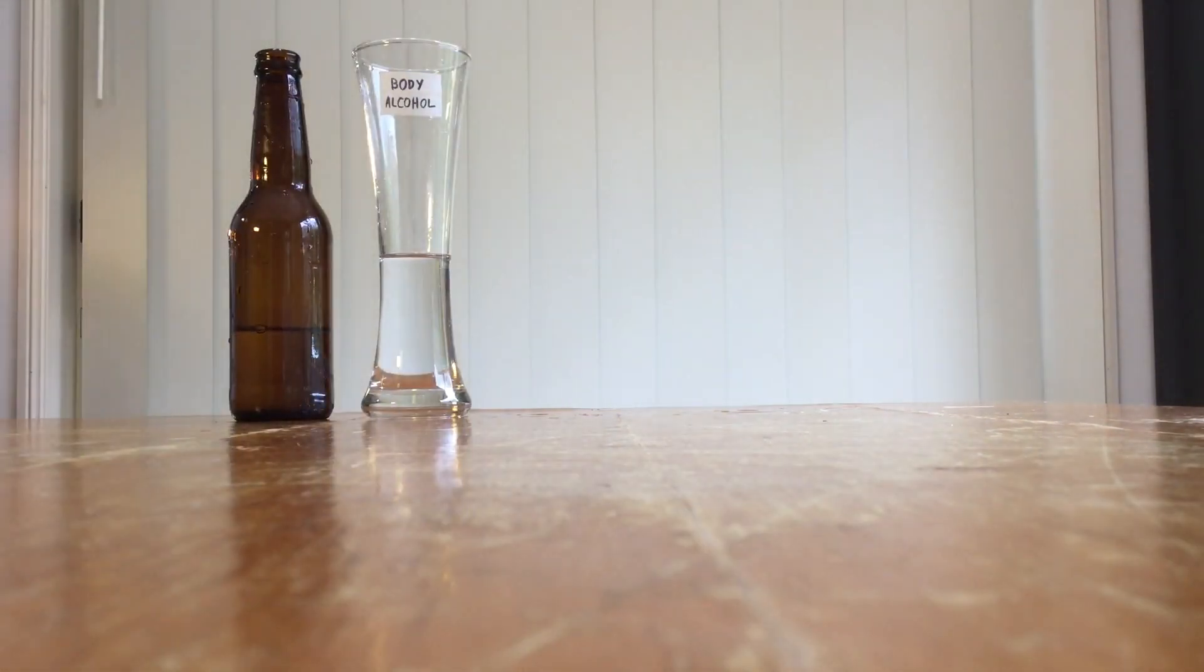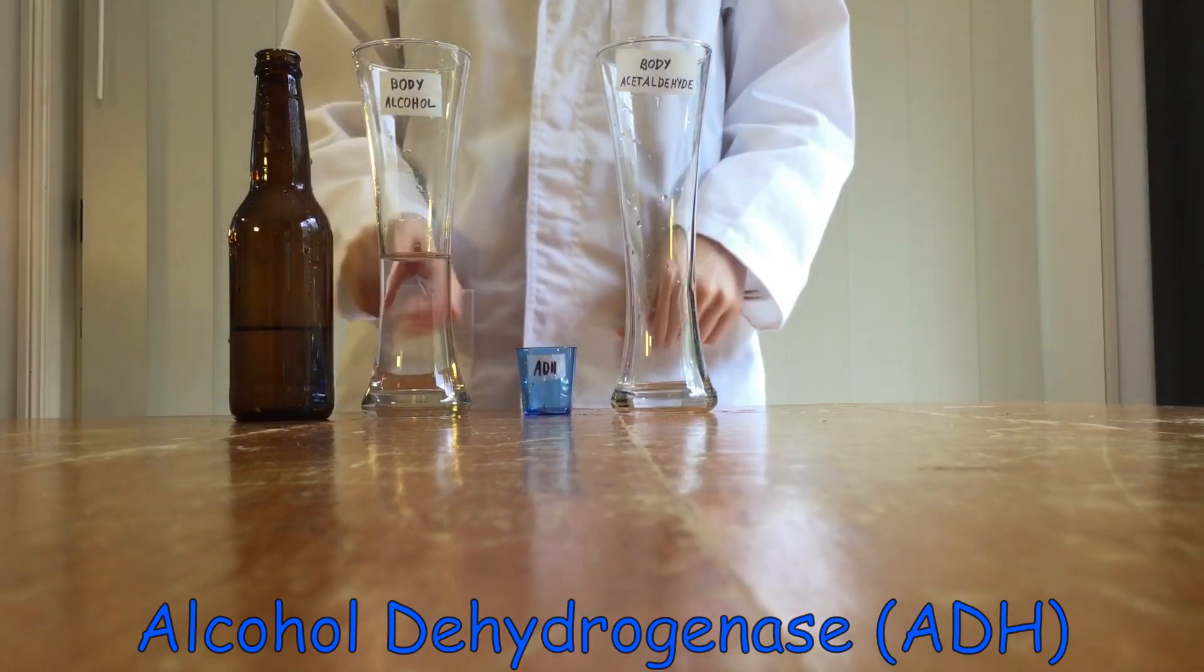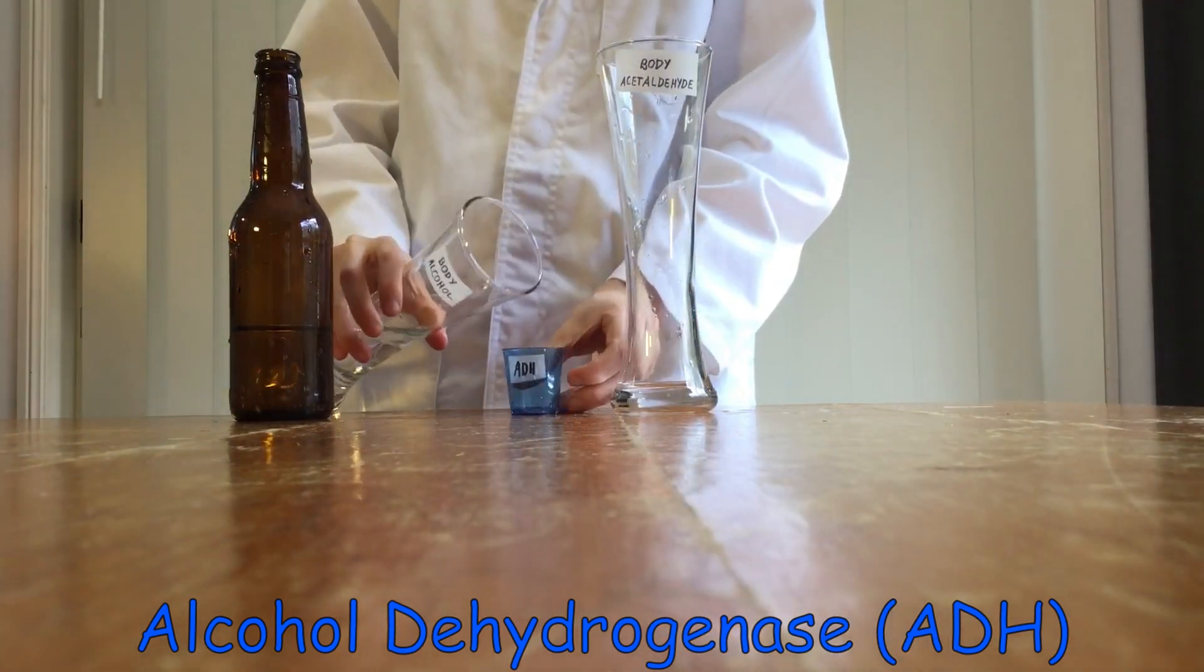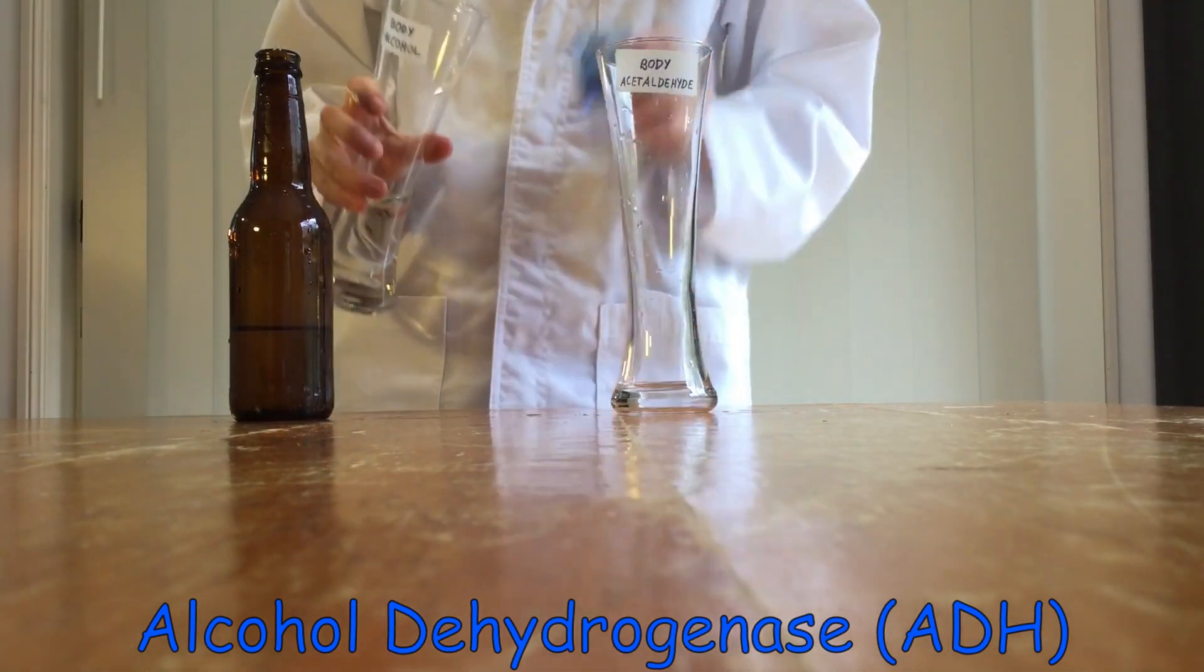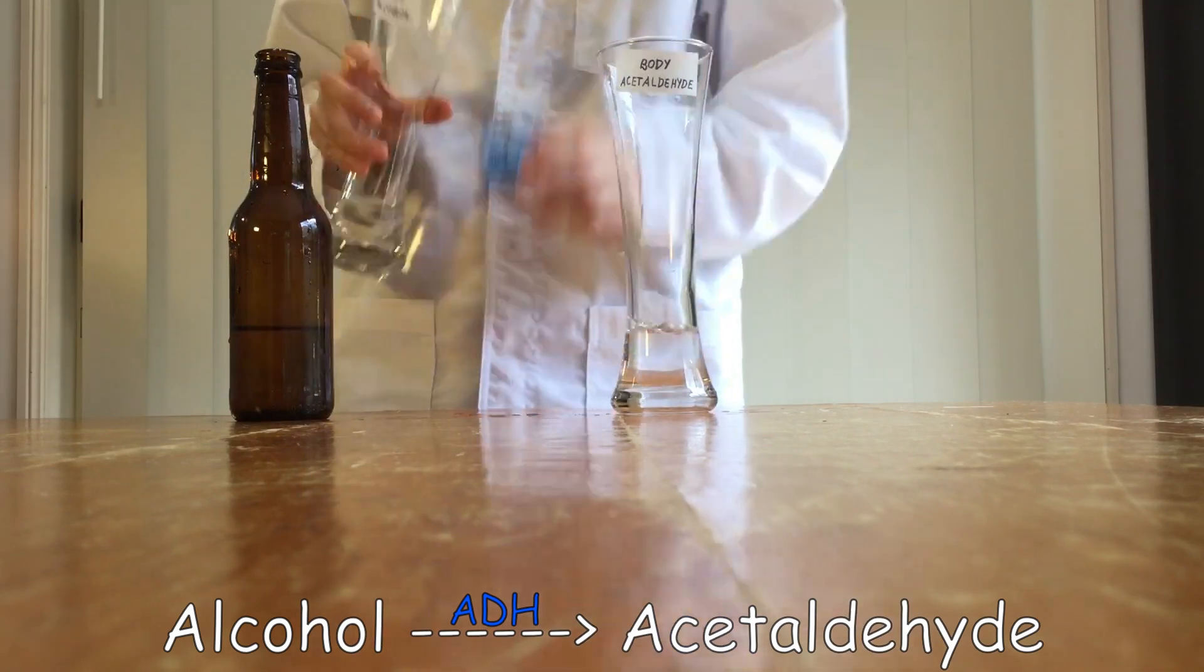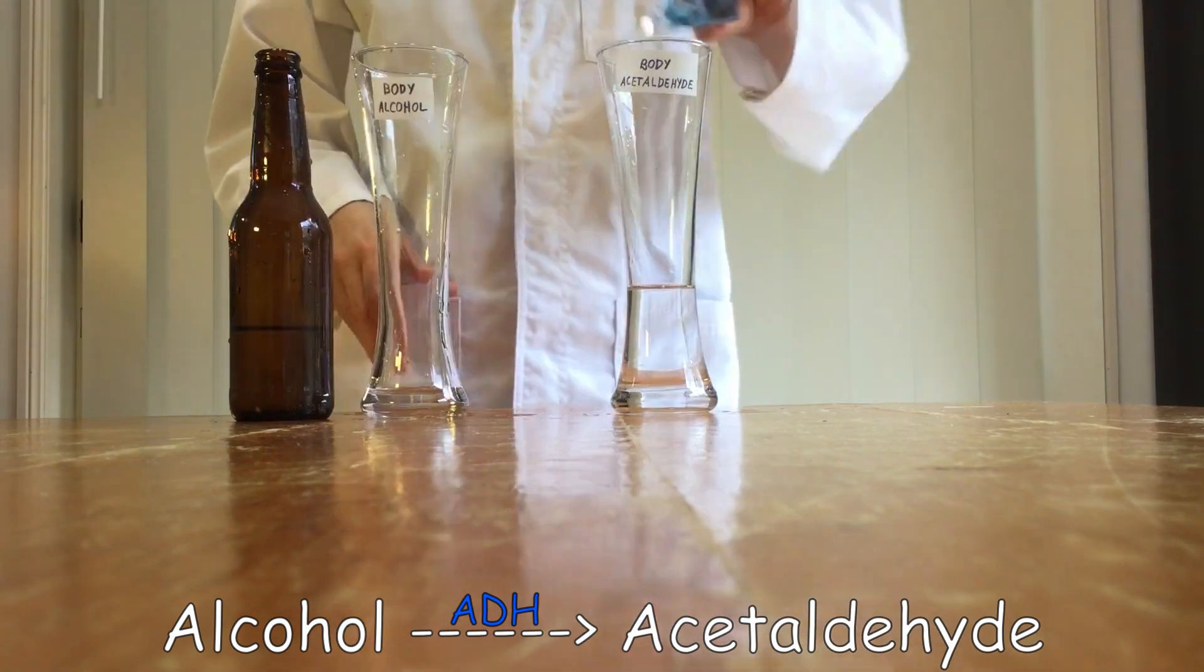So say you have a small amount to drink, a light beer. Let's say that's pretty well handled because your body uses an enzyme called alcohol dehydrogenase, or ADH, to turn it into acetaldehyde. Acetaldehyde, however, is even more toxic